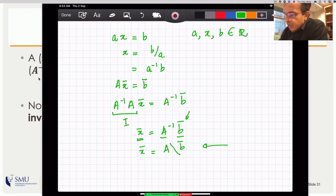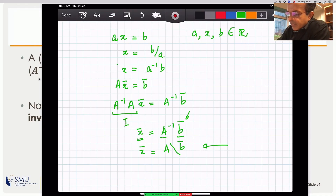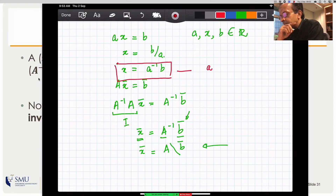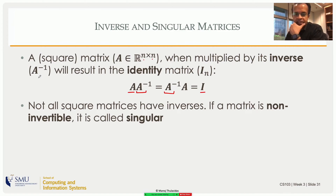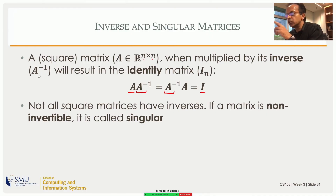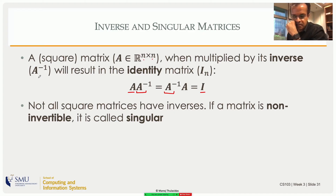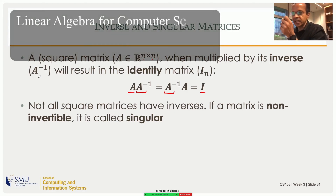Just as not all numbers have inverses — you cannot write a-inverse when a equals zero, since one over zero is undefined — not all matrices have inverses. Matrices for which you cannot find an inverse are called singular matrices. The zero matrix is singular, but it's not the only one; other matrices also cannot be inverted. In this broad sense, A has the same role as a number and A-inverse has the same role as the reciprocal.